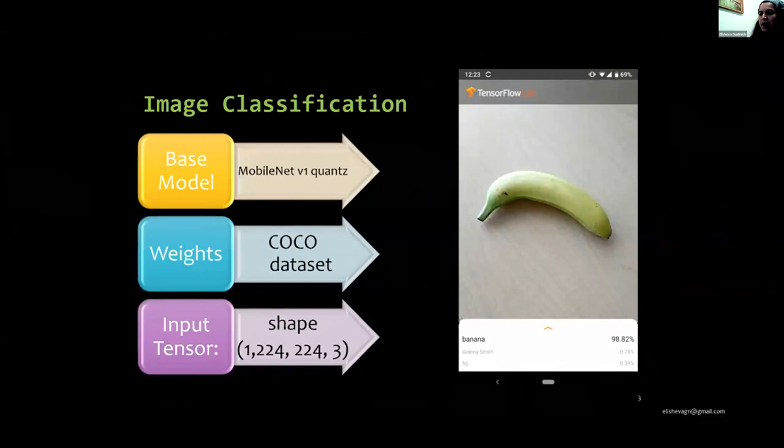The next apps are official TensorFlow Lite examples. You can find the link at the end of this presentation in the slide reference. This is an image classification app. The architecture model is a MobileNet version 1, pre-trained on COCO dataset.